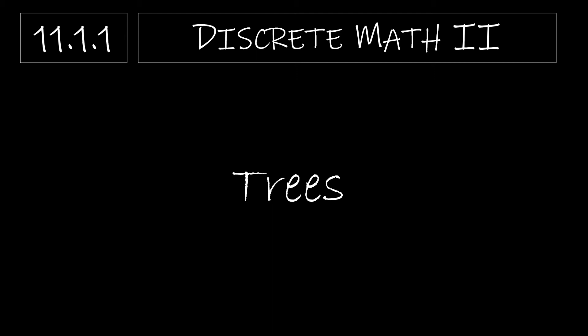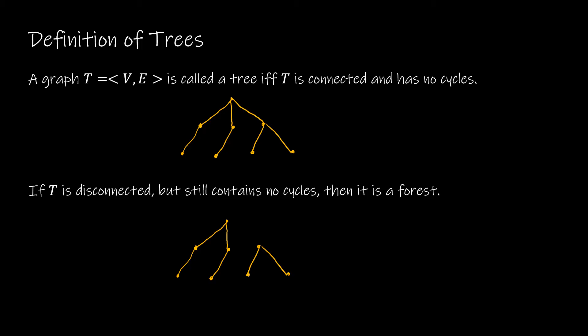In this video we're going to learn about trees. A tree is simply a special kind of graph, and a graph is considered a tree if it is both connected and has no cycles. You can see here that I have a tree — it is connected, meaning each vertex is connected in some way to another vertex on our graph, and it has no cycles.